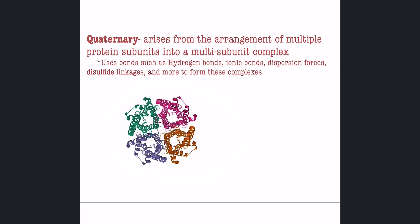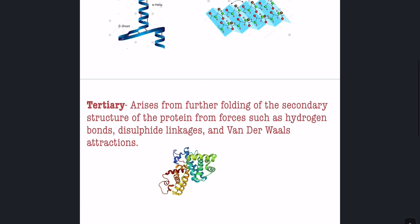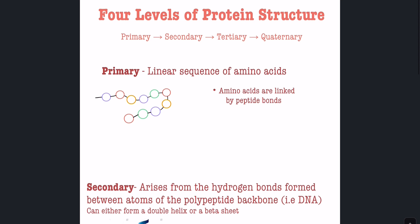To review: we have the primary structure, the secondary structure — which can either be a beta sheet or a double helix — the tertiary structure, which is the secondary structure as it folds in on itself, and the quaternary structure, which is just multiple tertiary structures connected to one another. And that's the four levels of protein structure.